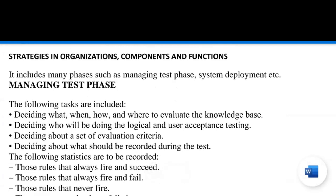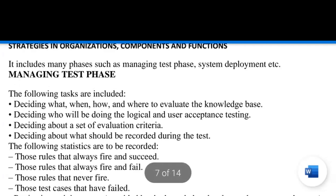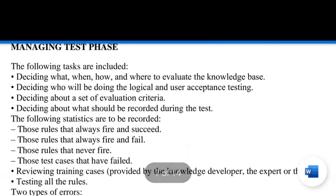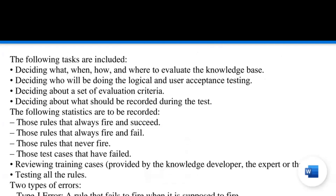Now we discuss strategies in organizations and their components and functions. First is managing the test phase, then system development. A person should know what is to be tested, when, how it is distributed, and where it is to be tested. Testing evaluates the knowledge base, and it must be clear who will perform logical testing and who is responsible for user acceptance testing. Evaluation criteria should be defined and what should be recorded during the test must be clearly established.